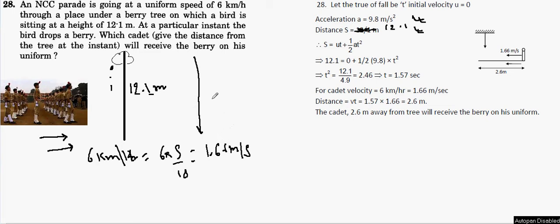We will consider this as ground. The height will be the total distance covered, so from there we'll get the time. Just put s equals ut plus half at squared, put all the values, will get the time. The cadet velocity is 1.66 meters, hence the distance traveled by the cadet during this time of 1.57 will be 1.57 times the velocity which is 2.6 meters.